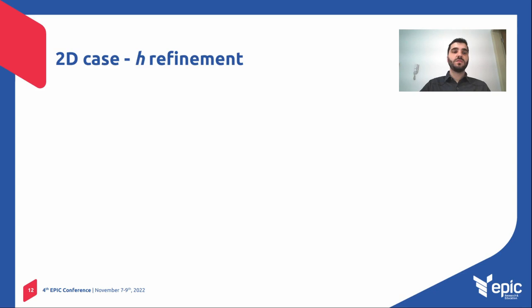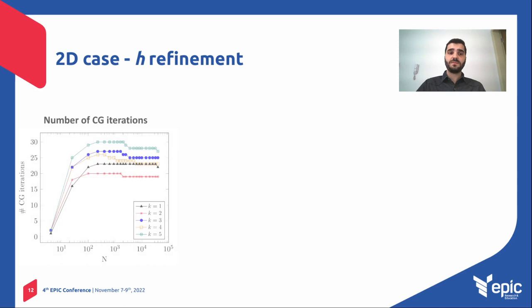So let's go first to the 2D case, which is with h-refinement. In this case, when I say h-refinement, it means that we are taking a finite element mesh and then putting more elements inside of it.